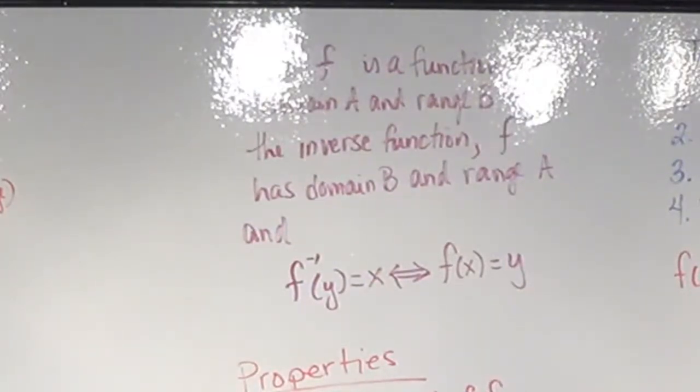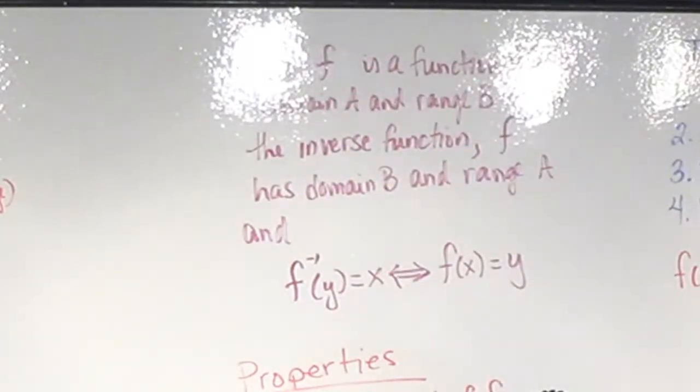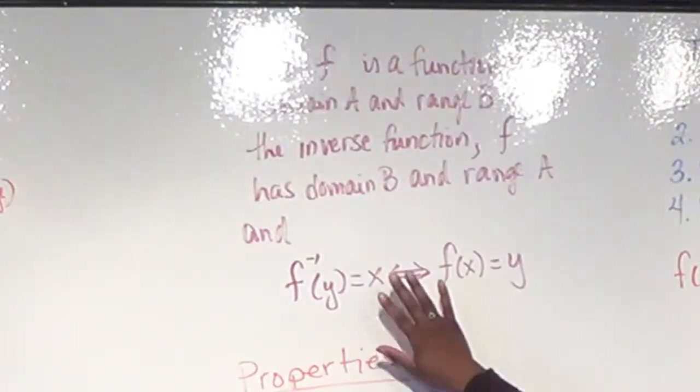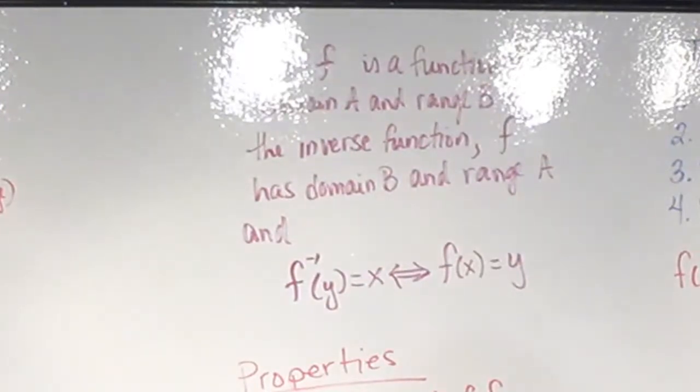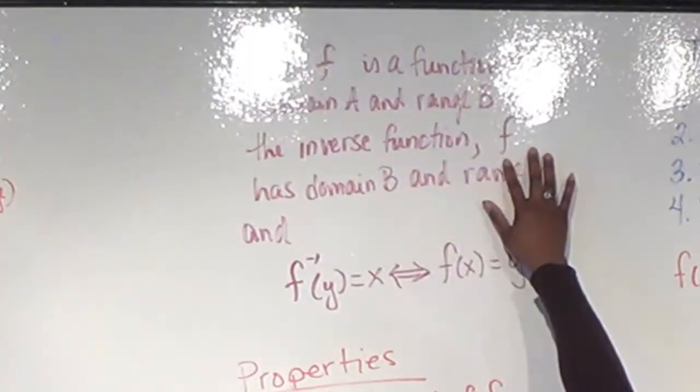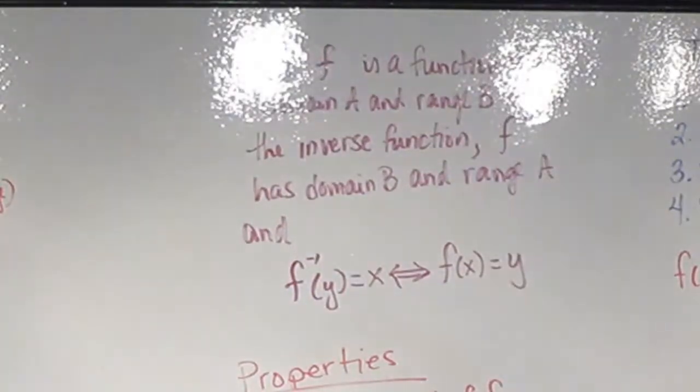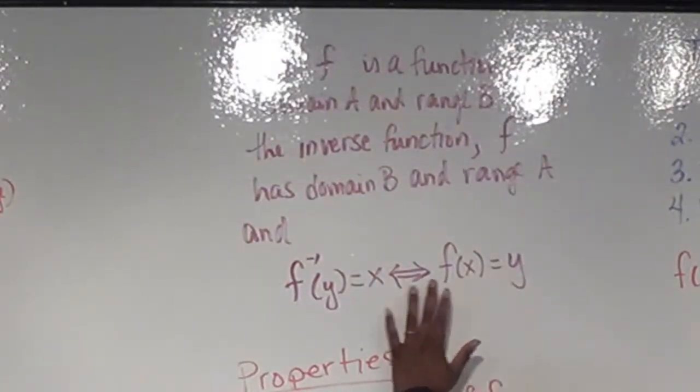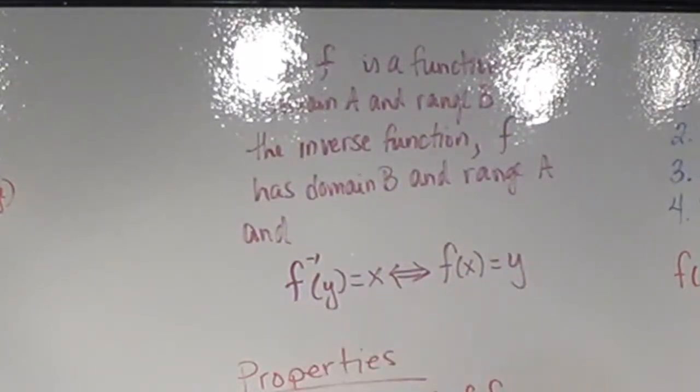We're going to be using this notion of one-to-one to determine whether or not a function has an inverse function. To start this conversation, every function is going to have an inverse. The inverse is basically taking the image, or the range, and rewriting it so that it becomes the domain of the function. If f is a function with domain a and range b, then the inverse function, f inverse or f to the negative 1, has domain b and range a. More importantly, if f of x equals y, f inverse of y should equal x, and that goes both ways.